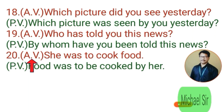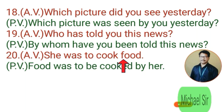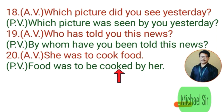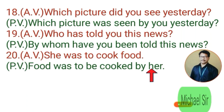Twentieth example. Active voice: 'She was to cook food.' Here 'she' is subject, 'was' is verb, 'to cook' is another verb, and 'food' is object. In passive voice, 'food' becomes subject. According to subject, we write 'was,' then 'to be,' then the third form 'cooked,' then 'by her' — 'she' becomes 'her.' Passive: 'Food was to be cooked by her.' Thank you very much for listening.